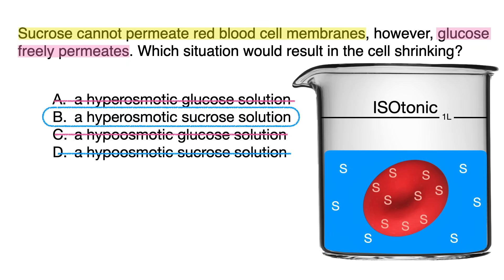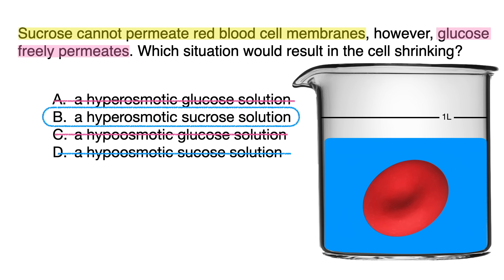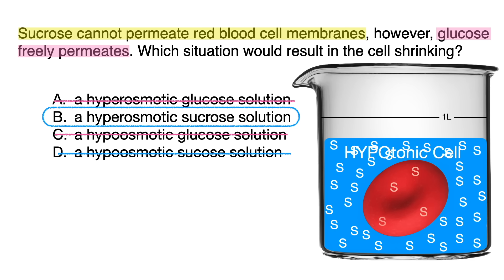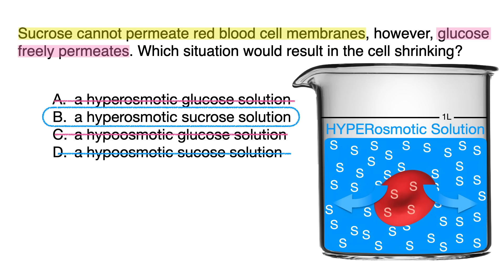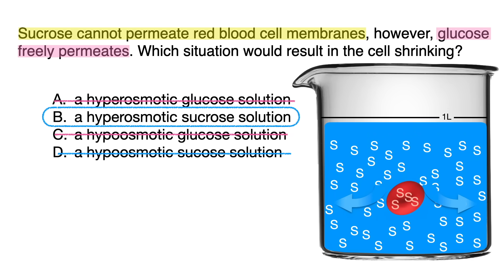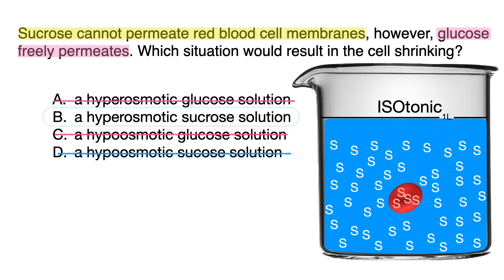That leaves us with B as the correct answer. Here's why this solution causes the cell to shrink: this is when we had a hypotonic cell — lower sucrose concentration inside the cell than outside — making it a hyperosmotic solution. In this case, water flows out of the cell toward the higher sucrose concentration in the surrounding solution, resulting in the cell losing water for the sake of reaching isotonicity and shrinking — which confirms B is the correct answer.